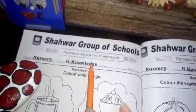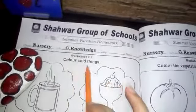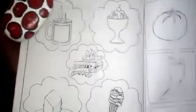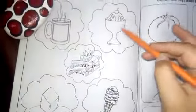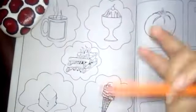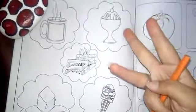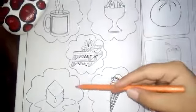Assalamu alaikum and good morning to all. I hope you all are fine. Today we have to do version number one, class nursery, general knowledge. Color the cold things. Look at here, where are the cold things? Yeah, one, two, and three. There are three cold things.